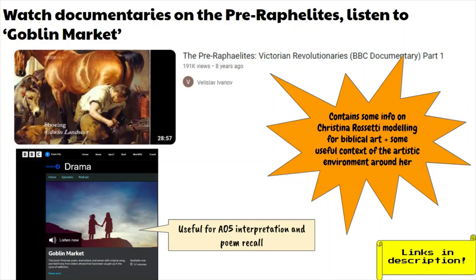Another fun way to review 'Goblin Market' — which is a very long poem — is this dramatic BBC interpretation, which is fairly recent, so it's useful for AO5. We might struggle with AO5 here and rely on critics, but this reminds us that 'Goblin Market' has had other lives since publication — there's even a famous Playboy interpretation. It will also help you recall key moments of the poem.